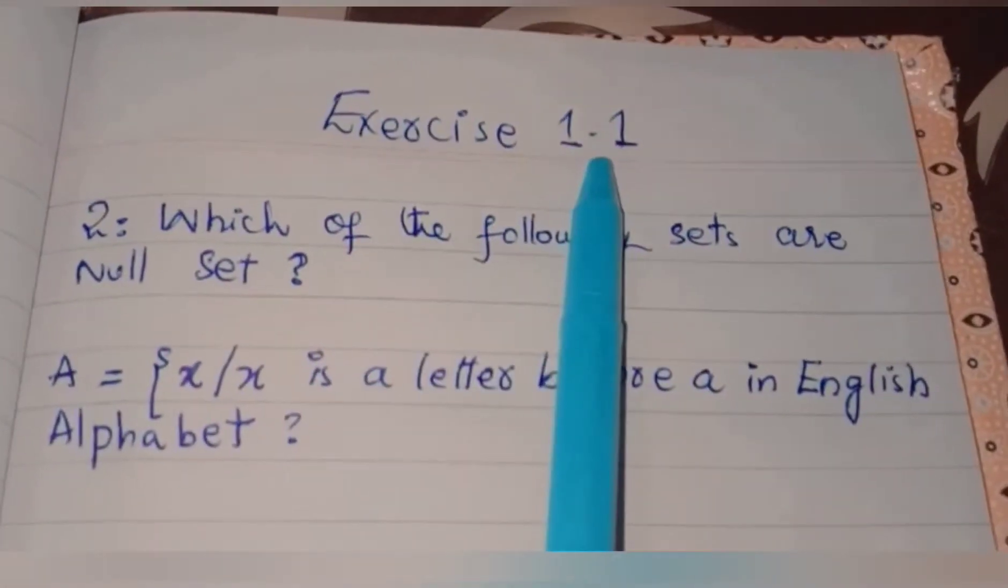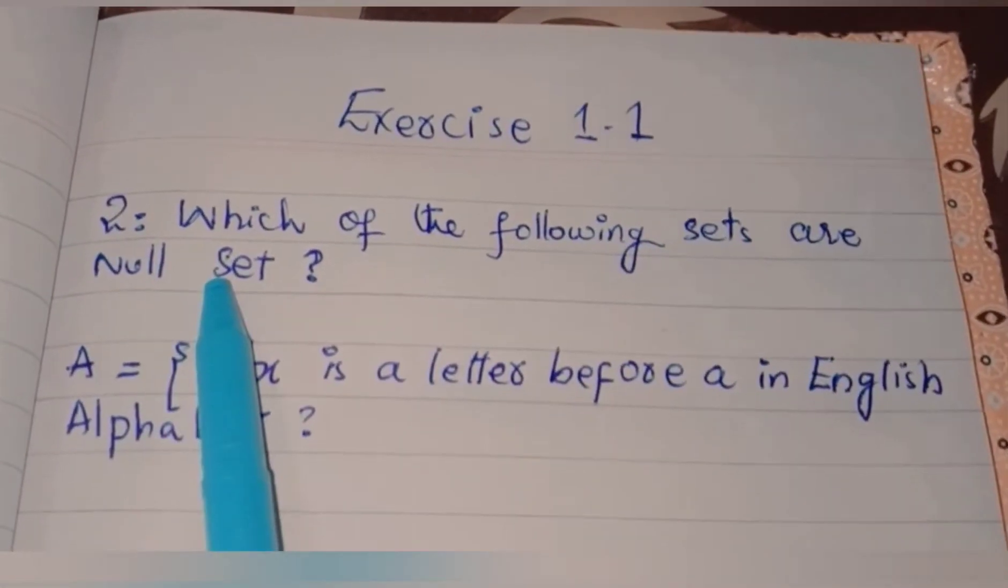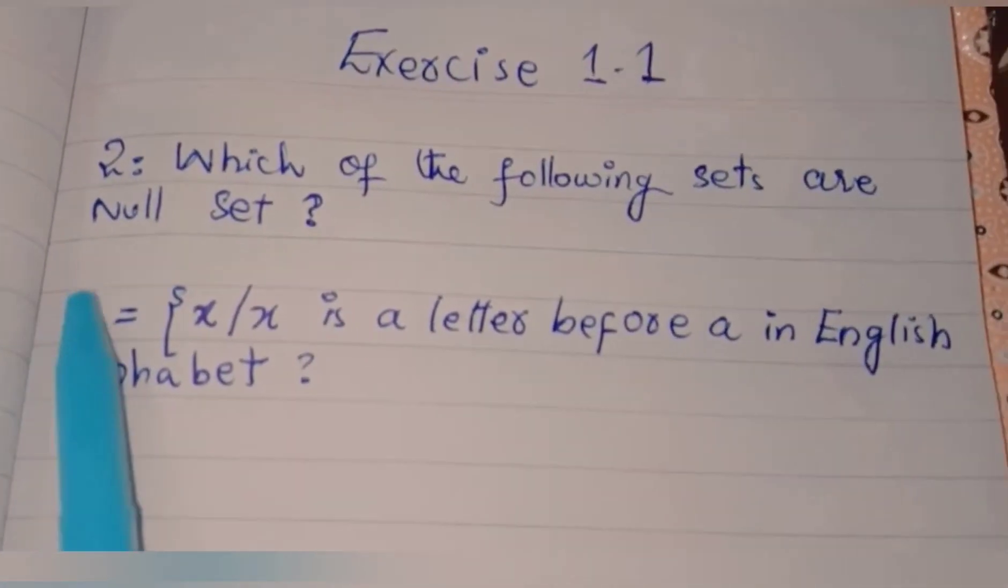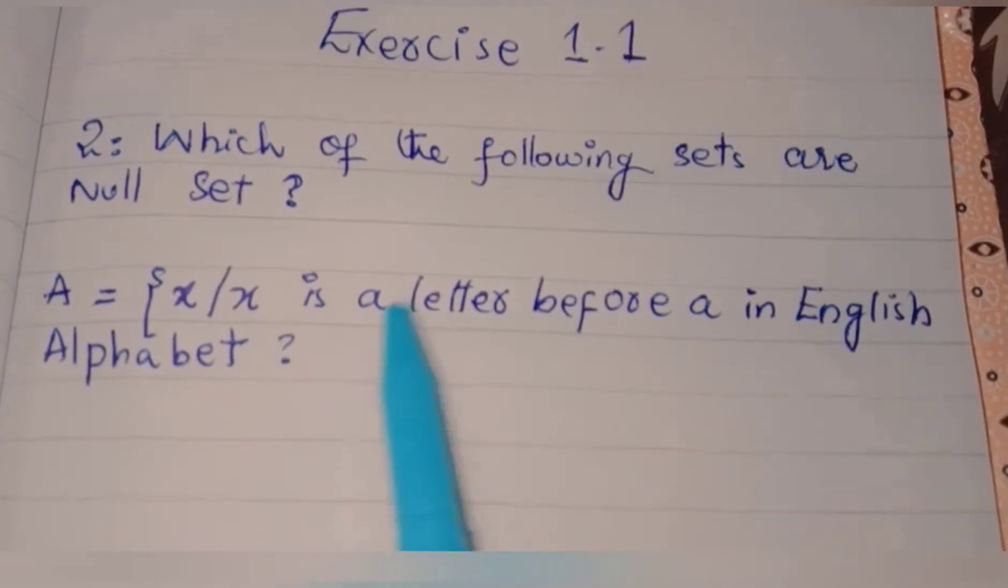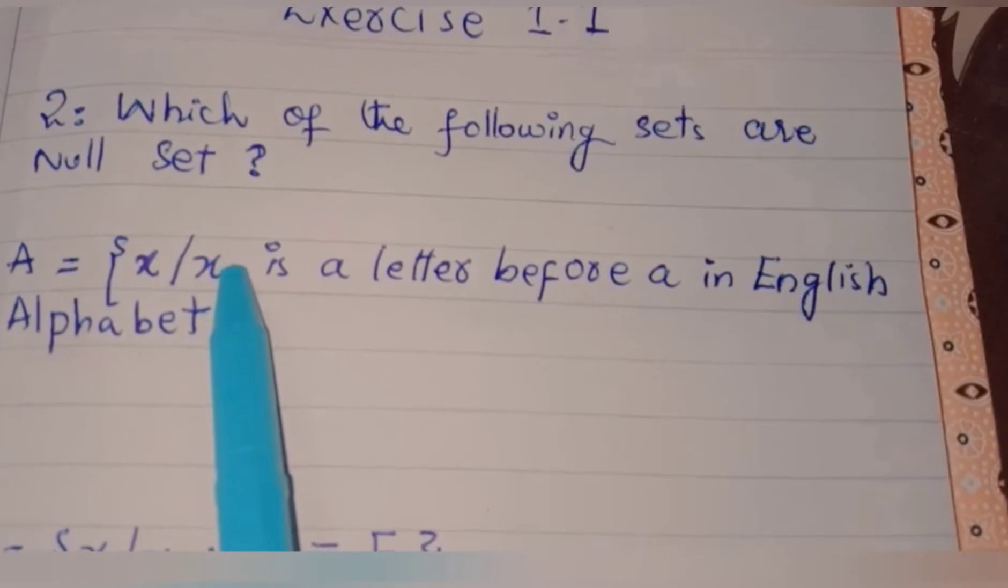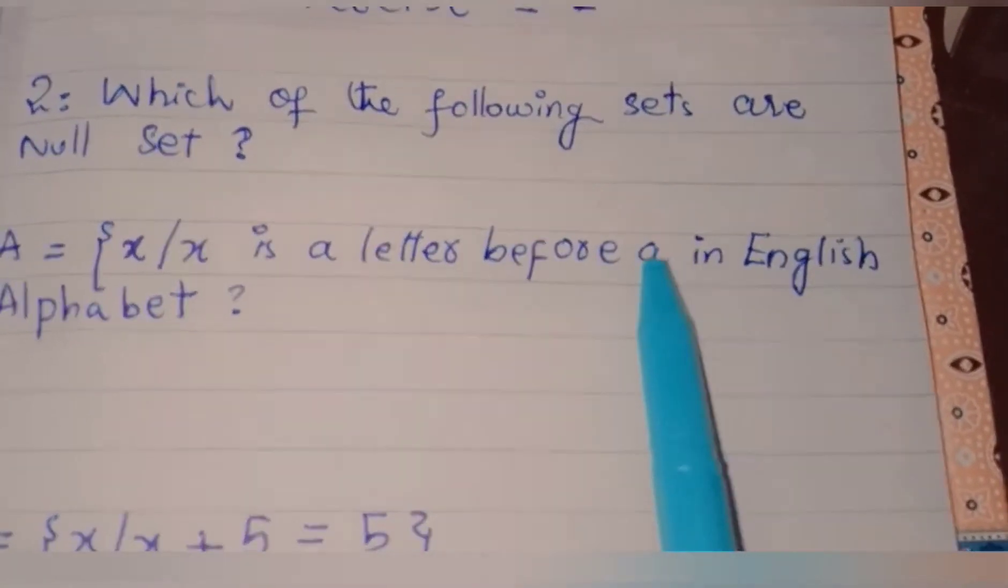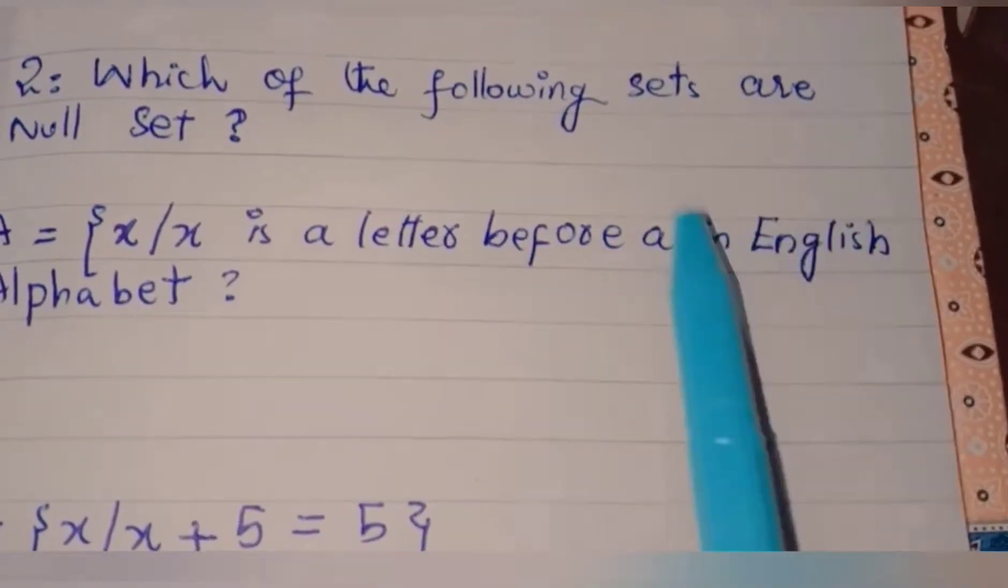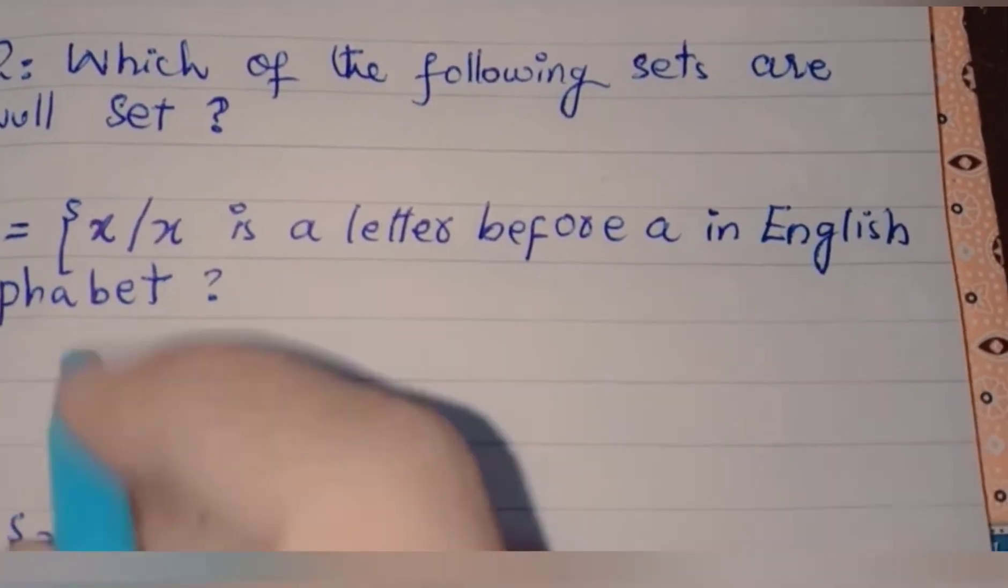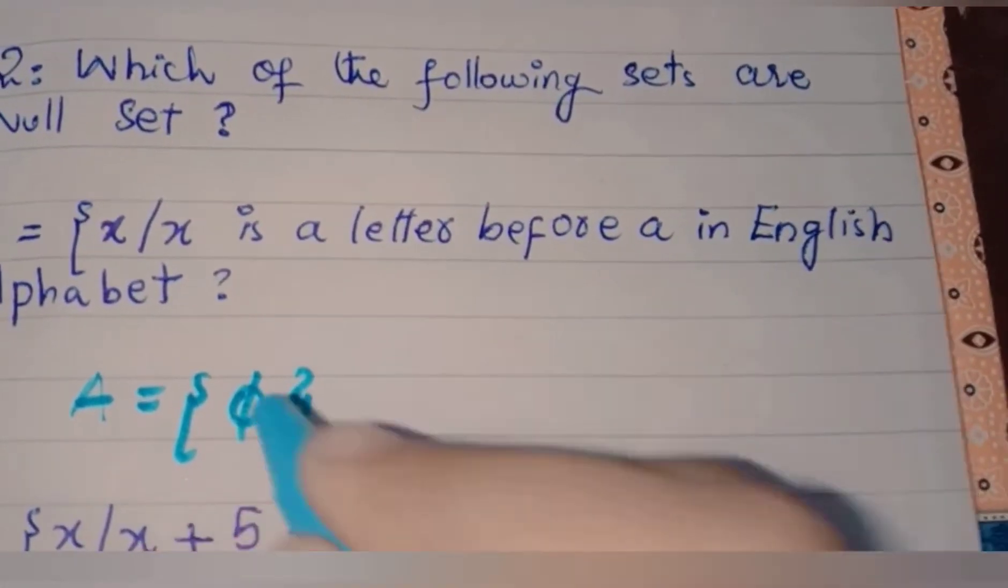Assalamualaikum. Exercise 1.1, question number two: which of the following sets are null sets? Part A: A equals the set {x/x is a letter before a in English alphabet}. Since there are no letters before 'a' in the English alphabet, this is a null set.